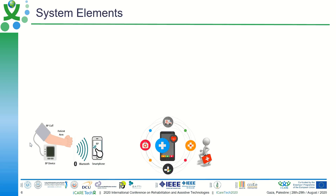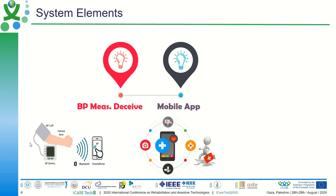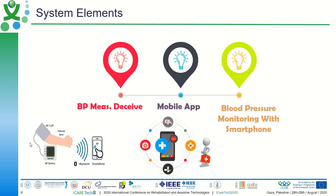What are our system elements? Our system elements will be the blood pressure measuring device and the mobile app. The mobile app is installed in a smartphone that is paired with this blood measurement device, as we see here in this figure.